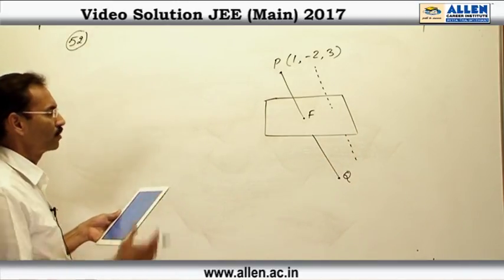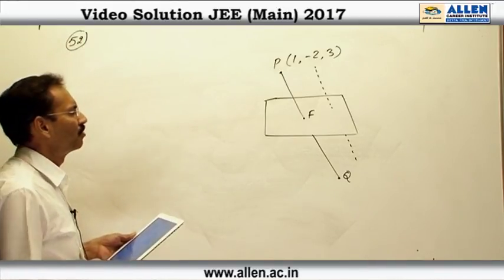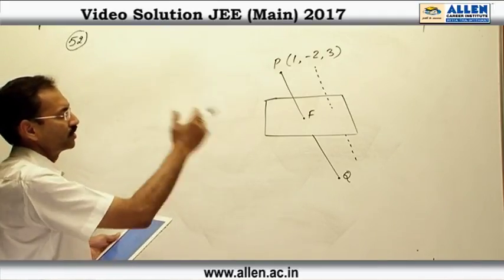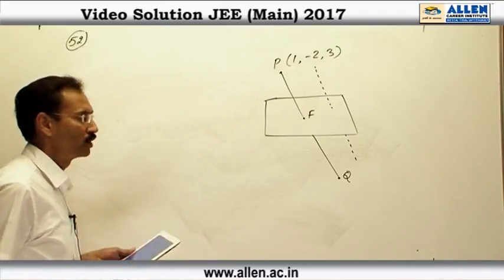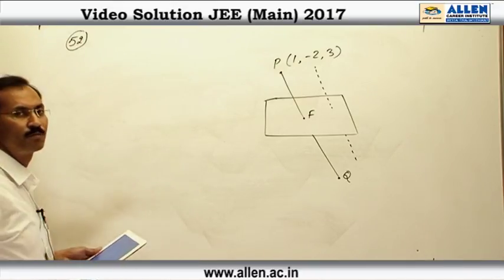So we have to find out PQ. Although image is not used in the correct context, but under these circumstances the best meaning is to find out the distance PQ. So we will calculate F point and PQ will be twice of PF.